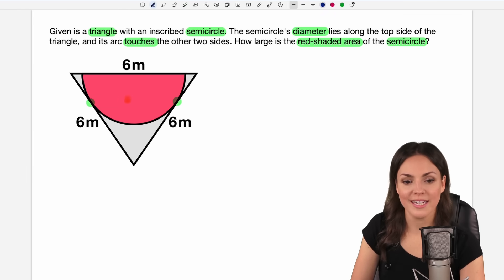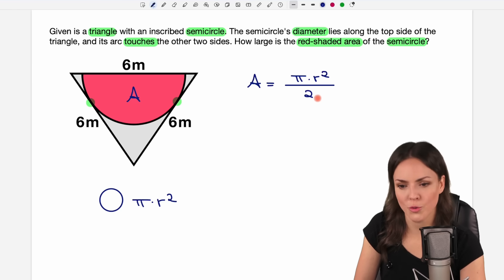Okay we have to find this area, I call it A. And to find the area of a full circle the formula for this is pi times the radius squared. So if we only have half of such a full circle we take this formula here and divide it by two. This is the formula for the area of our semicircle.